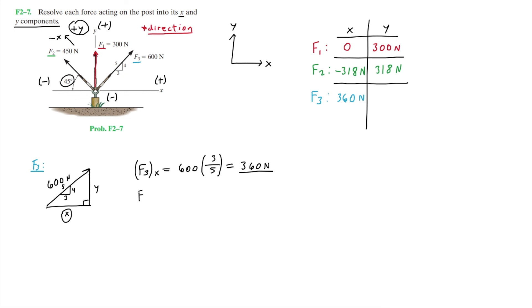Now looking for the Y component F3Y, that is going to be essentially the same, except we're going to replace the 3 with the 4, which is in the Y direction. So that is simply 600 times 4 fifths, which equals 480. Therefore, the Y component of F3 is 480 Newtons.